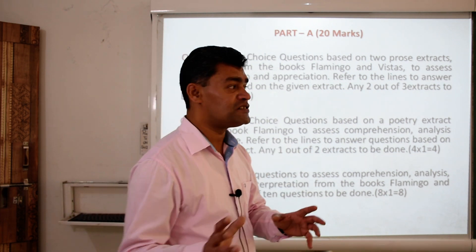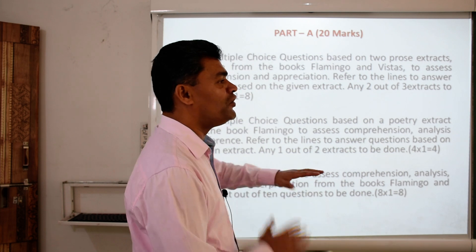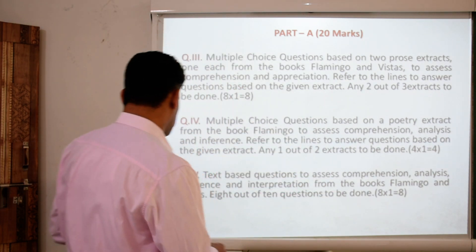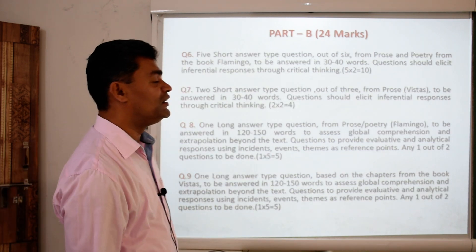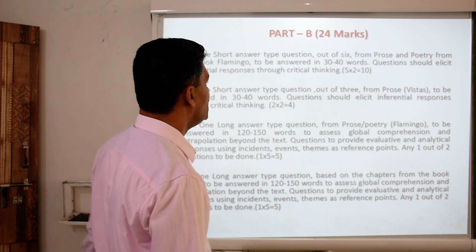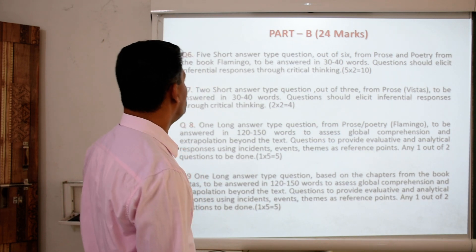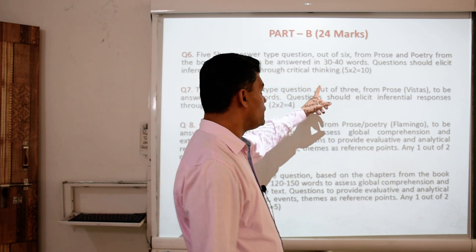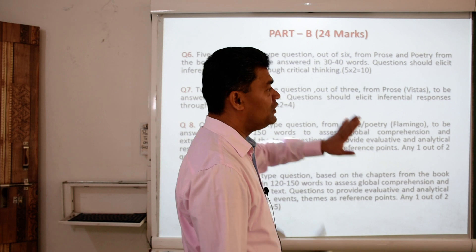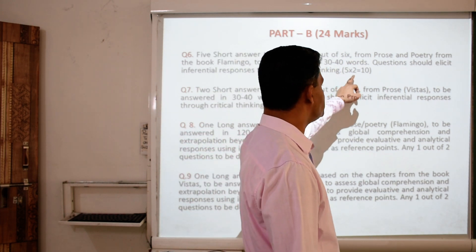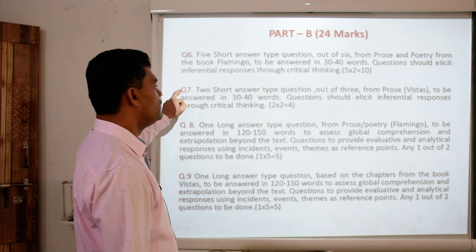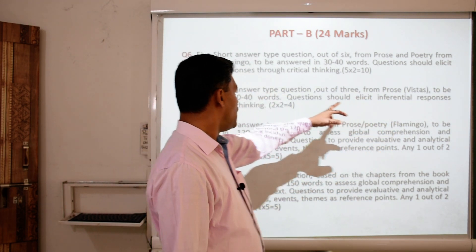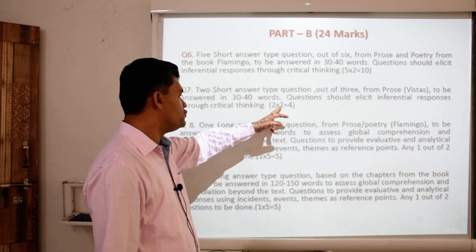Now for the remaining 24 marks of literature in Part B: question number 6, you will be given 6 short answer questions from the book Flamingo, out of which you have to answer only 5, within the word limit of 30 to 40 words. Each question carries 2 marks, so naturally you get 10 marks. Then question number 7: you will be given 3 questions from the prose of Vistas, out of which you have to answer only 2. Each question carries 2 marks, amounting to 4 marks.